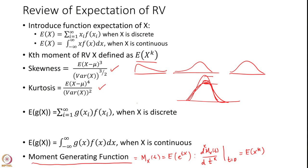We also introduced the expected value of a function of a random variable x. In the discrete case, it is a summation from i equals 1 to infinity of g(xi) multiplied by the probability mass function of xi, and in the continuous case, it is the integral from minus infinity to infinity of g(x) multiplied by the probability density function of x, dx.